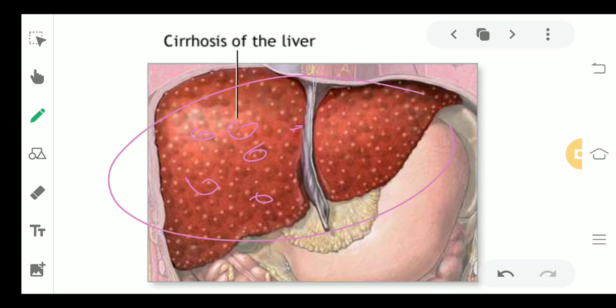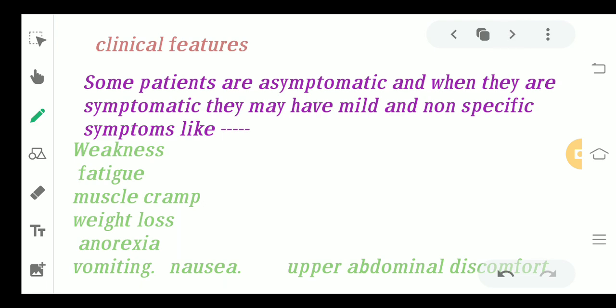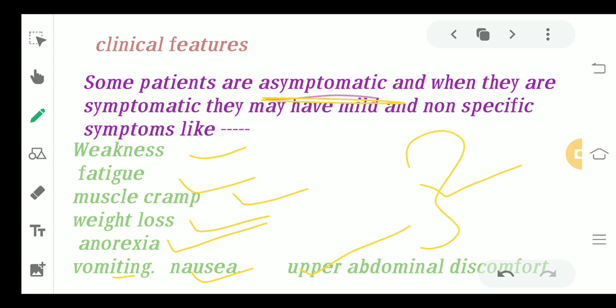Coming to clinical features: in general, the patient will be asymptomatic in most conditions. If specific symptoms do occur, they are very mild — such as weakness, fatigue, muscle cramps, weight loss, anorexia, vomiting, nausea, and upper abdominal distress. These are non-specific symptoms commonly seen in daily life due to poor lifestyle, so they don't clearly identify liver cirrhosis.